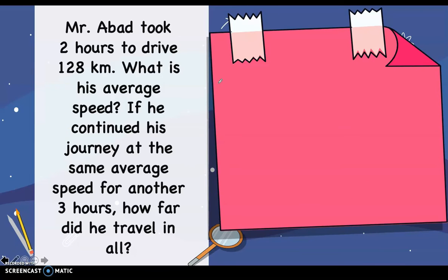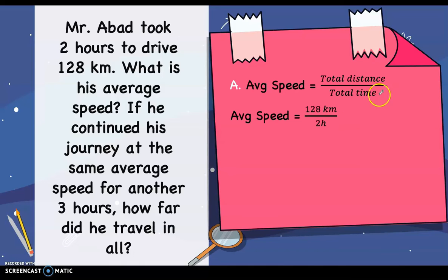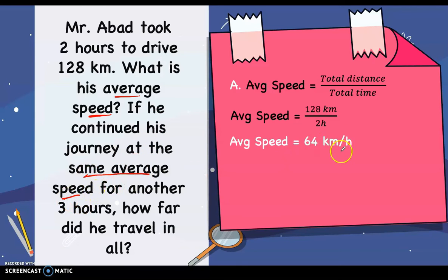Next: Mr. Abad took 2 hours to drive 128 kilometers. What is his average speed? Average speed equals total distance divided by total time: 128 kilometers divided by 2 hours gives 64 kilometers per hour. For the second question, if he continued his journey at the same average speed of 64 kilometers per hour for another 3 hours, how far did he travel in all?